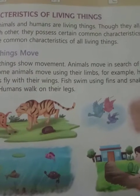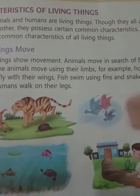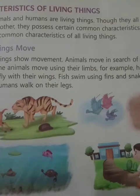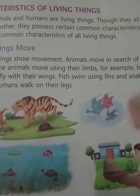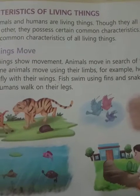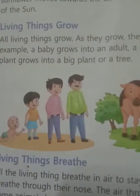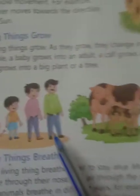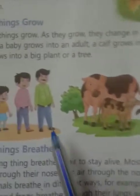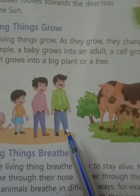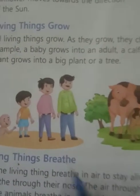Plants do not move as such, but their parts show movement — like a sunflower moves towards the direction of the sun. Second, living things grow. All living things grow.